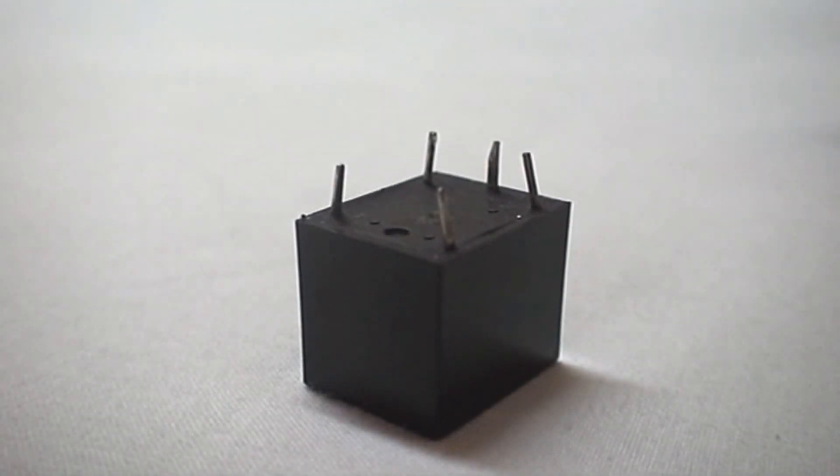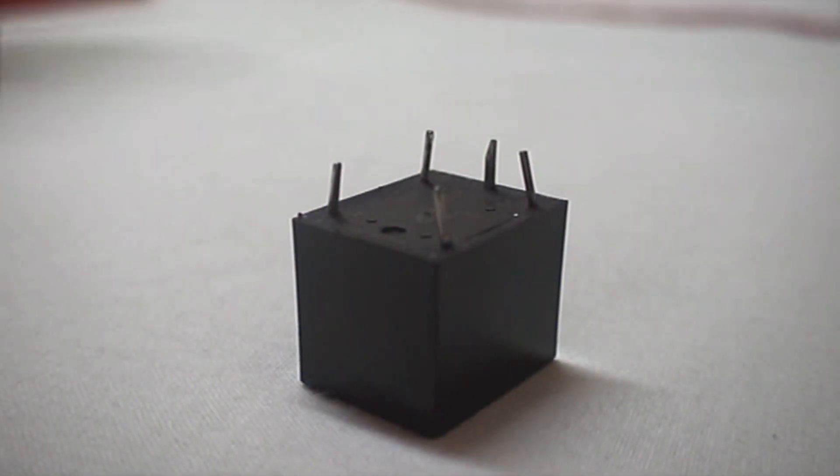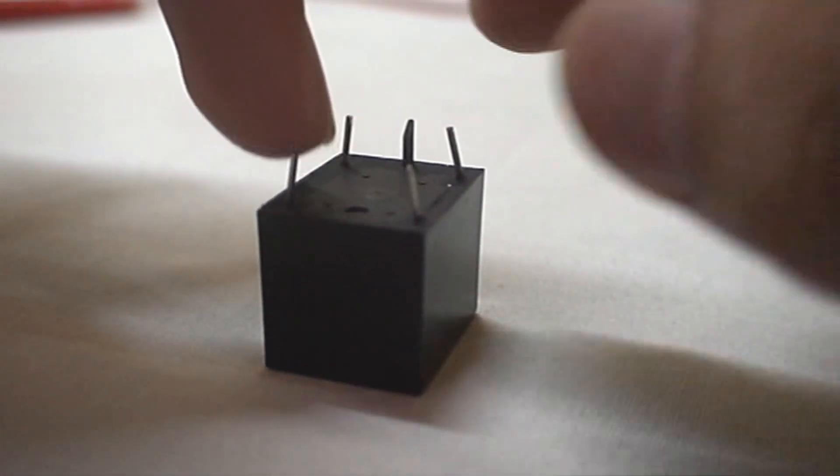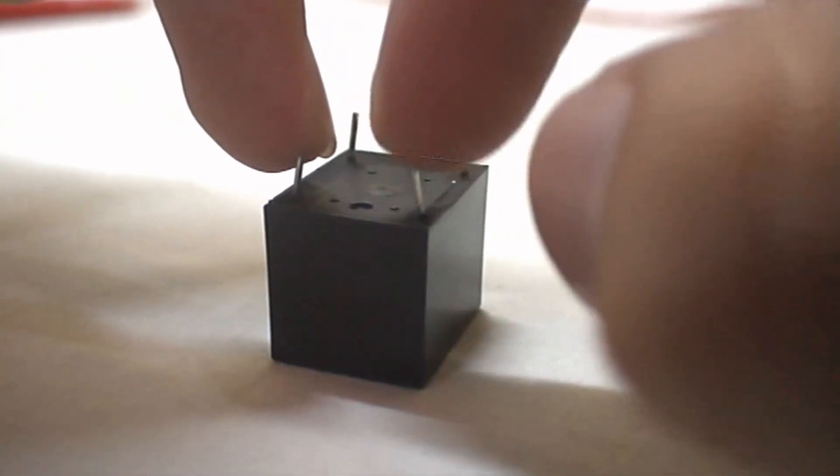As you can see, there are two terminals here. These two are the coil terminals that activate the electromagnet. This is the movable contact, this one is normally open, and this is normally closed. Here I have an instrument.